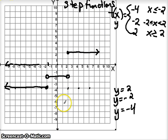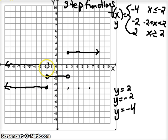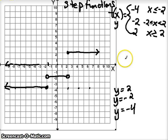A step function looks like steps or stairs, and it's usually when we have a bunch of horizontal lines. At this point you should be able to look at this and write the equations: y = -4, a horizontal line, only if x ≤ -2; y = -2, only if x is between negative 2 and 2; and a horizontal line at y = 2 as long as x ≥ 2. That's step functions. We'll continue more in another video.